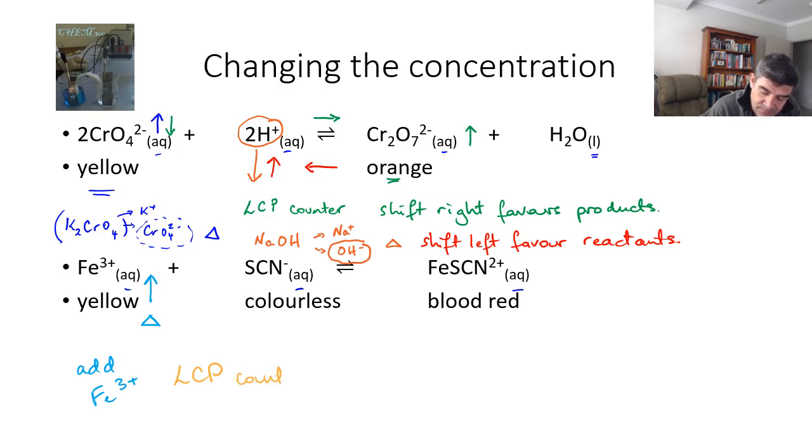The counter is to try and get the concentration of the iron back down. And therefore, the only way to do that is to shift to the right. So we use up those excess iron ions and we form more of the blood red iron-thiocyanate ion as a product. So we shift to the right and we favor products.